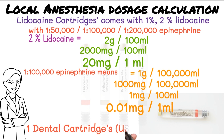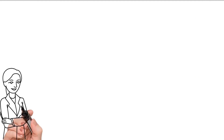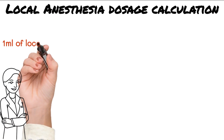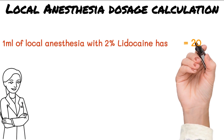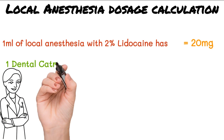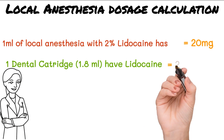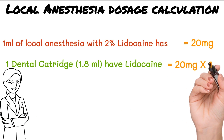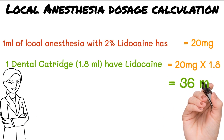One dental cartridge is mostly 1.8 milliliters, though 1.7 milliliter and 2.2 milliliter cartridges are also available. Since one milliliter of two percent lidocaine has 20 milligrams of lidocaine, one 1.8 milliliter dental cartridge will contain 20 milligrams multiplied by 1.8, equal to 36 milligrams of lidocaine.